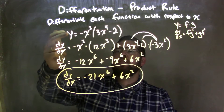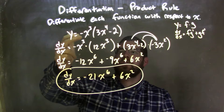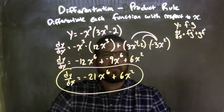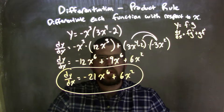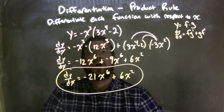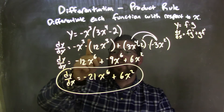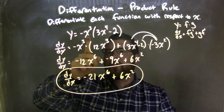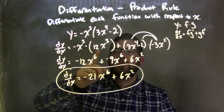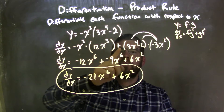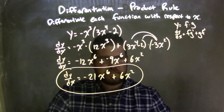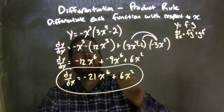So let's recap. We were given our function y equals negative x to the third times 3x to the fourth minus 2. We had to apply the product rule. The product rule states: the first part times the derivative of the second, plus the second times the derivative of the first.